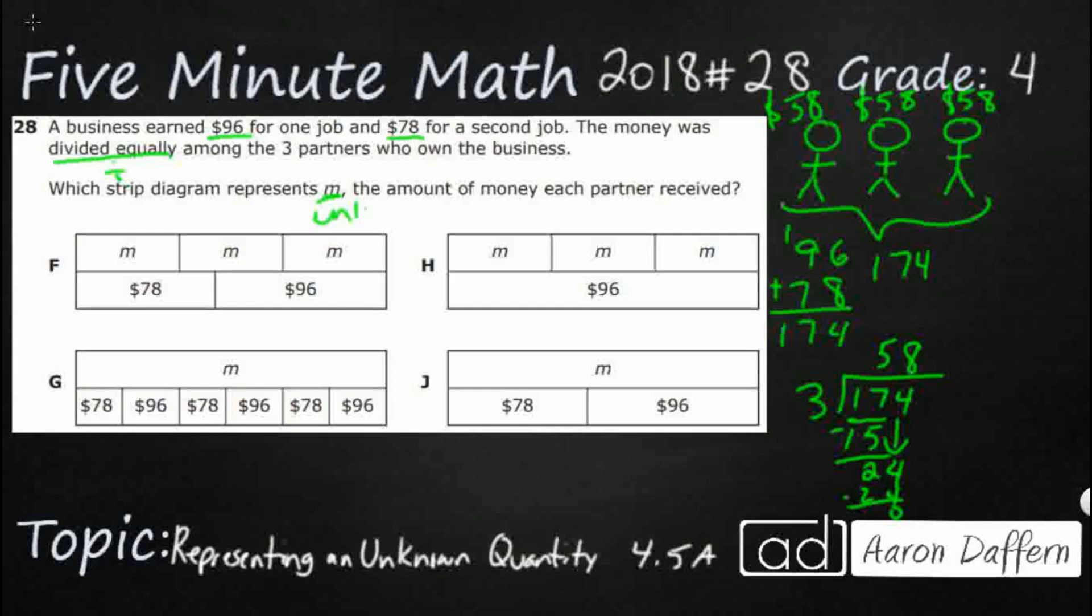So we think our M equals the amount of money each partner received. This is our unknown. Sometimes it's called a variable. Either way, it is just a letter that represents an amount that we don't know, at least at the beginning of the problem. Now we do. We know that it is $58.